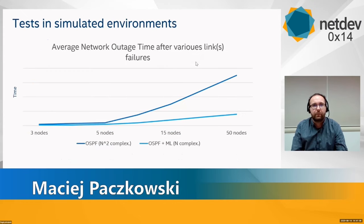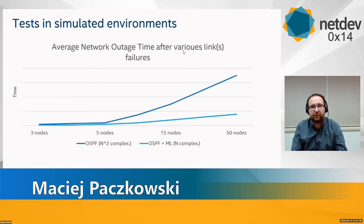Based on our initial calculations and tests in fully simulated environments, we are able to reduce network outage time by three to four times in the case of 50-node networks. Apparently, the temporary FIB calculated by artificial intelligence significantly decreased the outage time. Even if routing decisions based on it are not 100% accurate, they can decrease the packet loss level when network state is not stable. We didn't put exact times on the scale since for different simulation environments these times are different; however, the shape of this chart and the correlation of node times are constant.